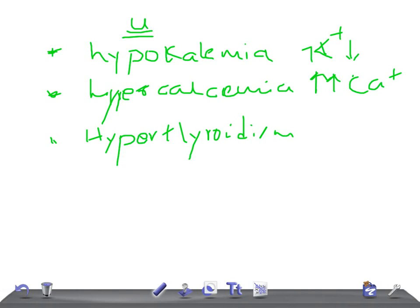For hypercalcemia, you see prominent U-waves along with the most important characteristic: shortening of the QT interval. If you see prominent U-waves with shortening of the QT interval, check the blood calcium level.